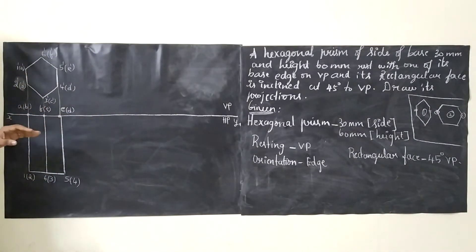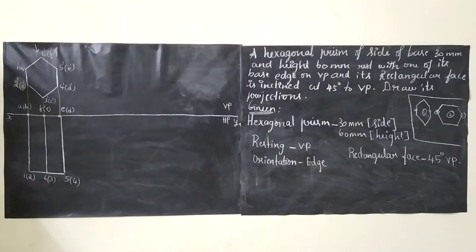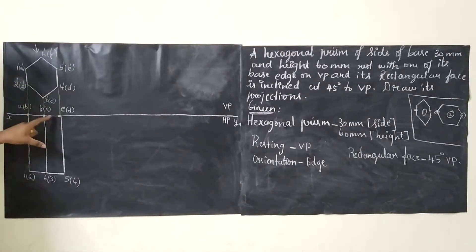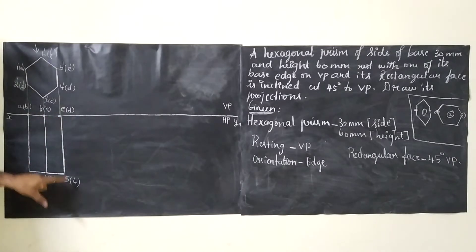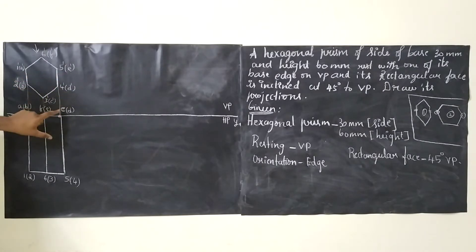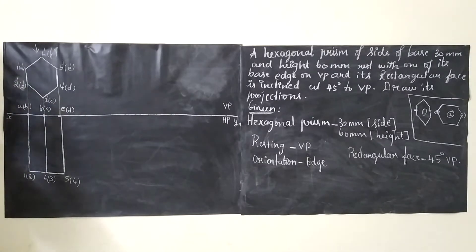When we see from the top, it's very easy to draw the top view because the height is already given as 60mm. Top face will show alphabets and bottom face will show numerals. When you see from the top, you can see A but not B, so A is paired with B. You can see F but not C, so F with C. You can see E but not D. Same for numerals — 1 is visible but 2 is not.